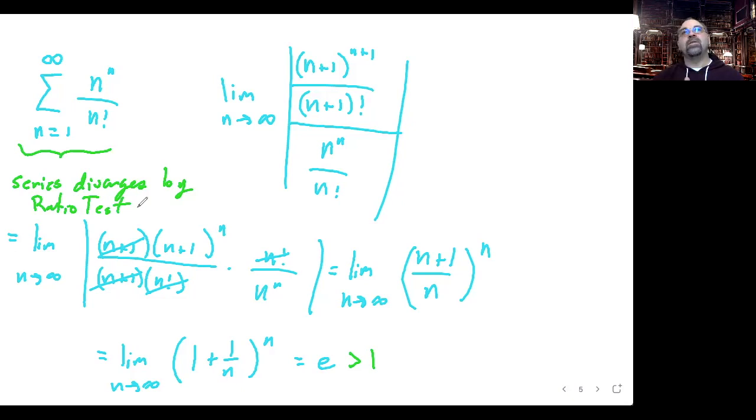Now, some of you might have been thinking, well, couldn't we have done that with the nth term divergence test? And yes, you could have. The tricky bit to the nth term divergence test is you have to prove that that ratio n to the n over n factorial doesn't go to zero as n goes to infinity. And so, then it's kind of like, well, who wins the race? Is it n to the n or is it n factorial? Which one's going to get to infinity faster? It turns out it's n to the n. Again, the exponential function is much faster than the factorial function, even though factorial gets big really fast as well.